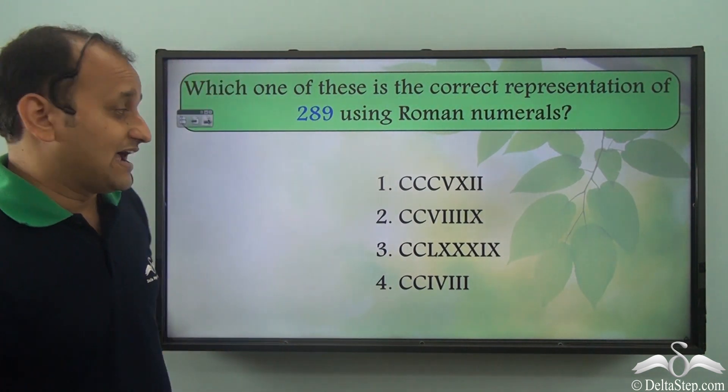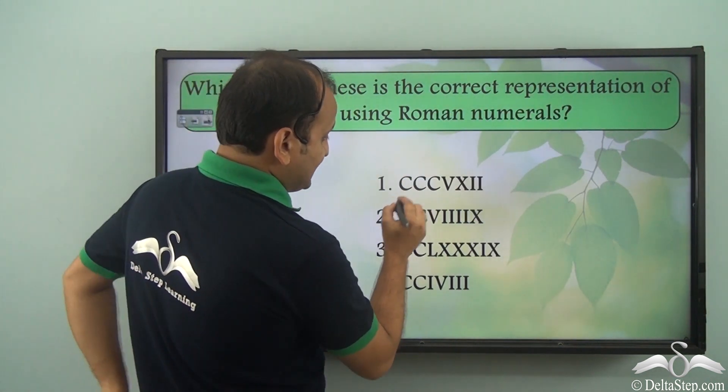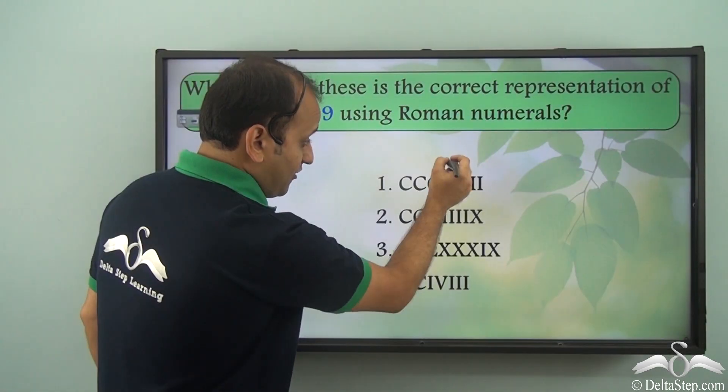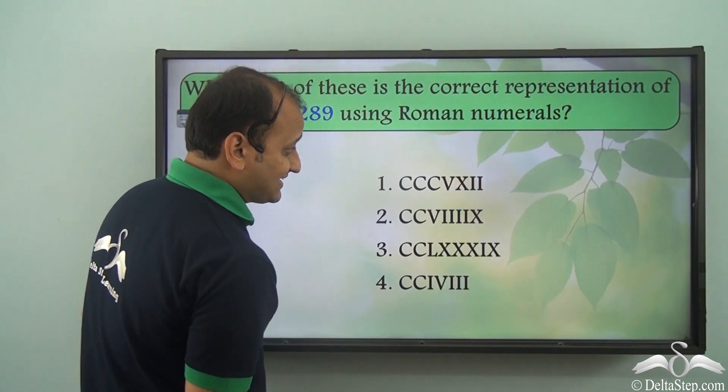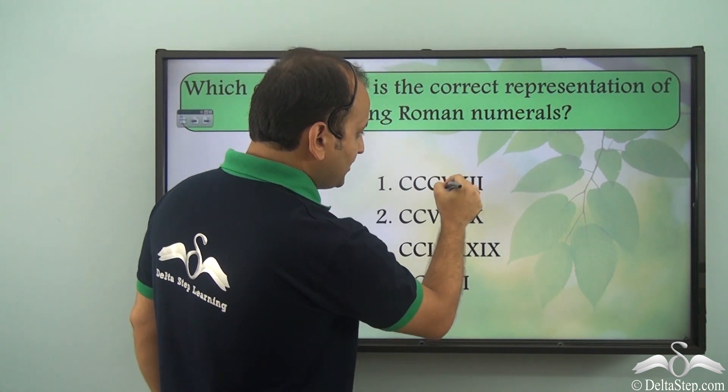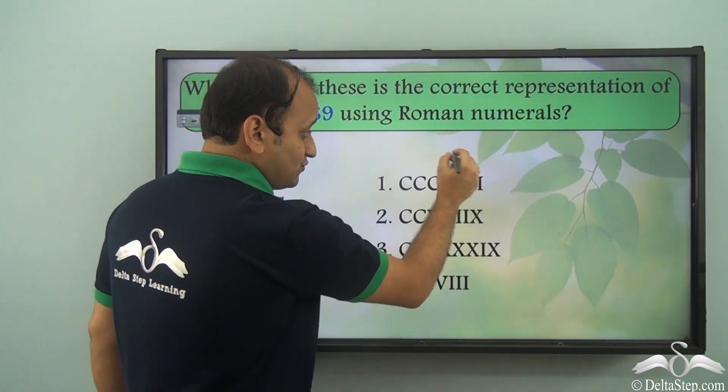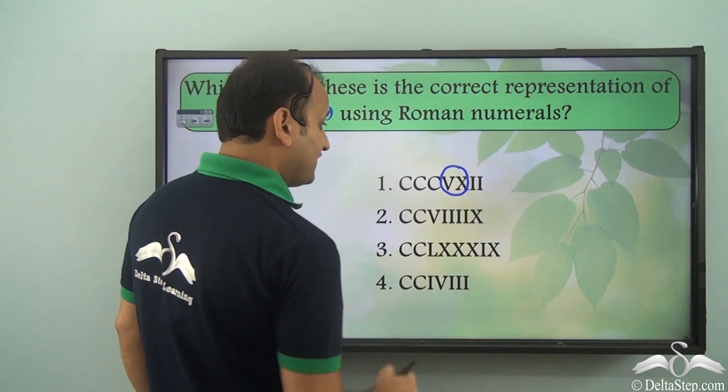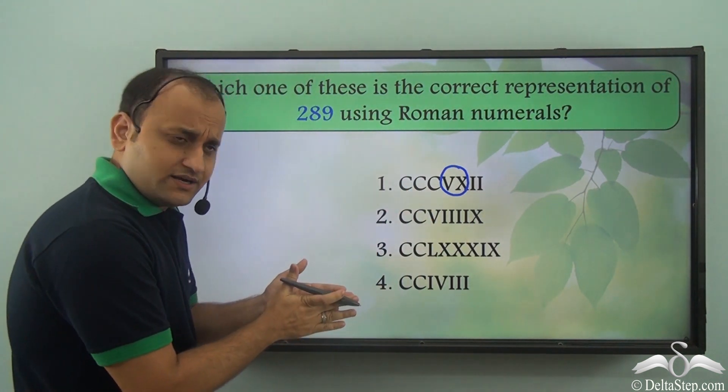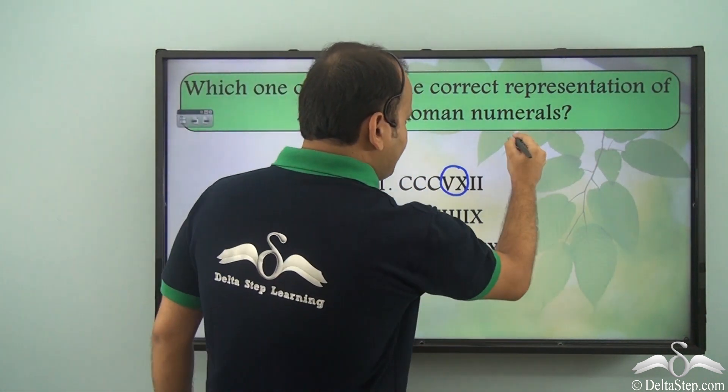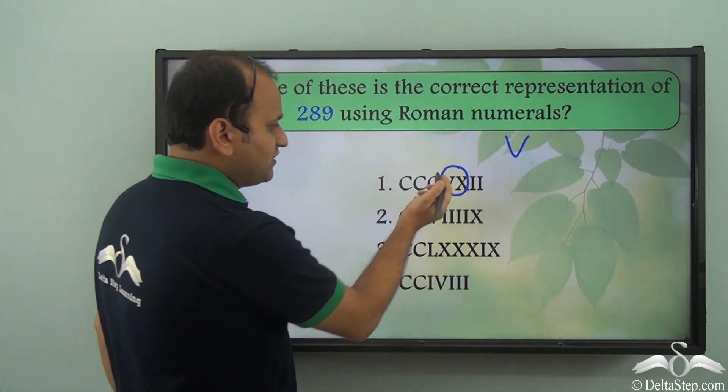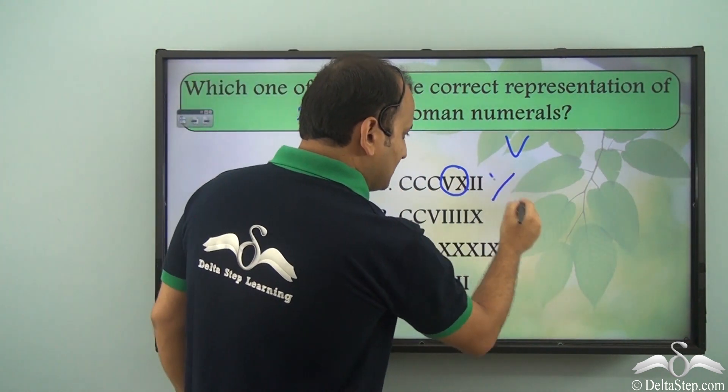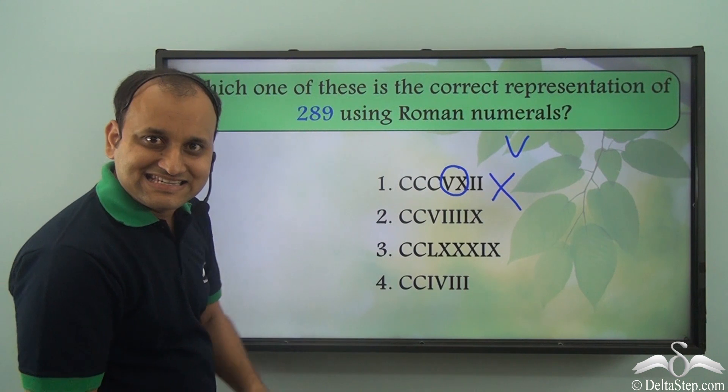Well, let's see which is the right answer. So we have C, that is 100. So 100, 100, 100, that is 300. We have a V and then an X. Now we have a smaller numeral to the left of a larger numeral. So we will subtract 10 minus 5, which is 5. So this is 5. But that is absurd because we already have V as a symbol for 5. Why do we need to write it as this? It's not required at all. So this is completely a wrong form. This cannot represent 289 at all.